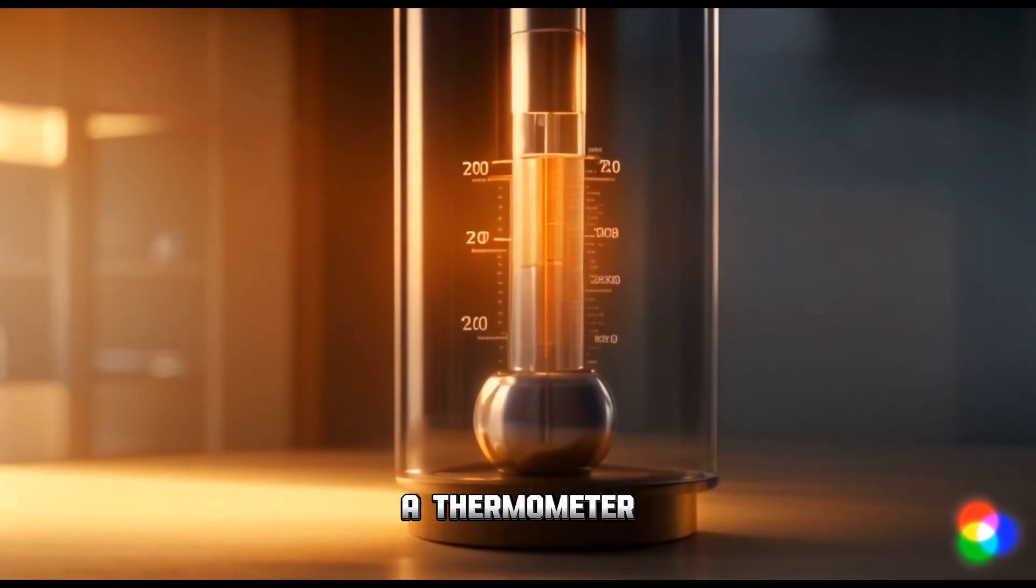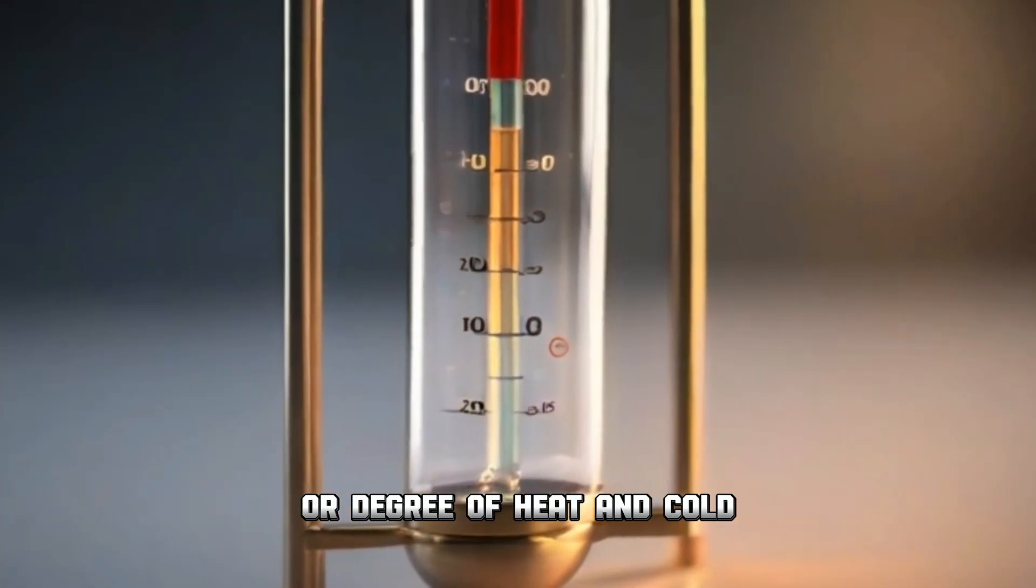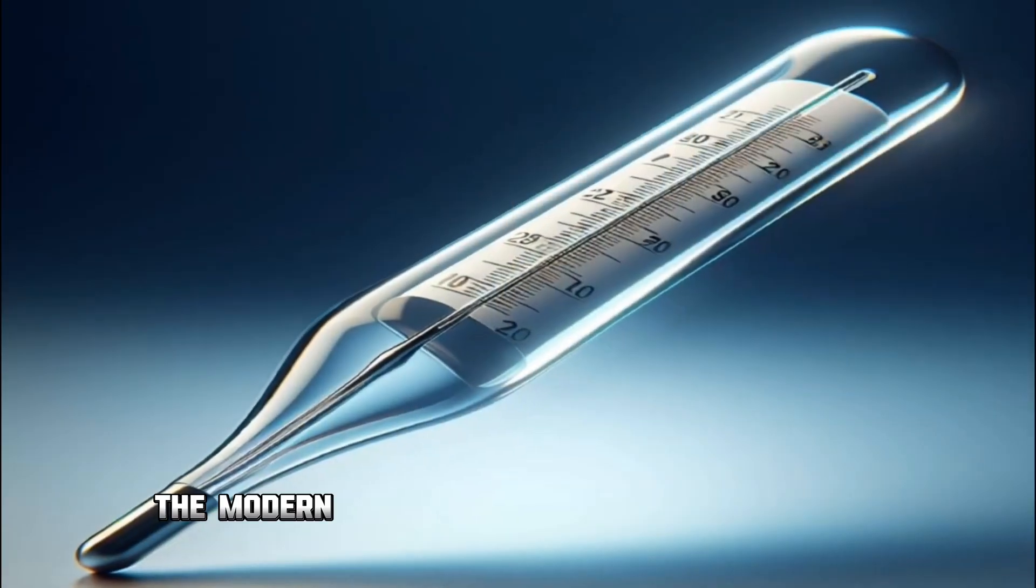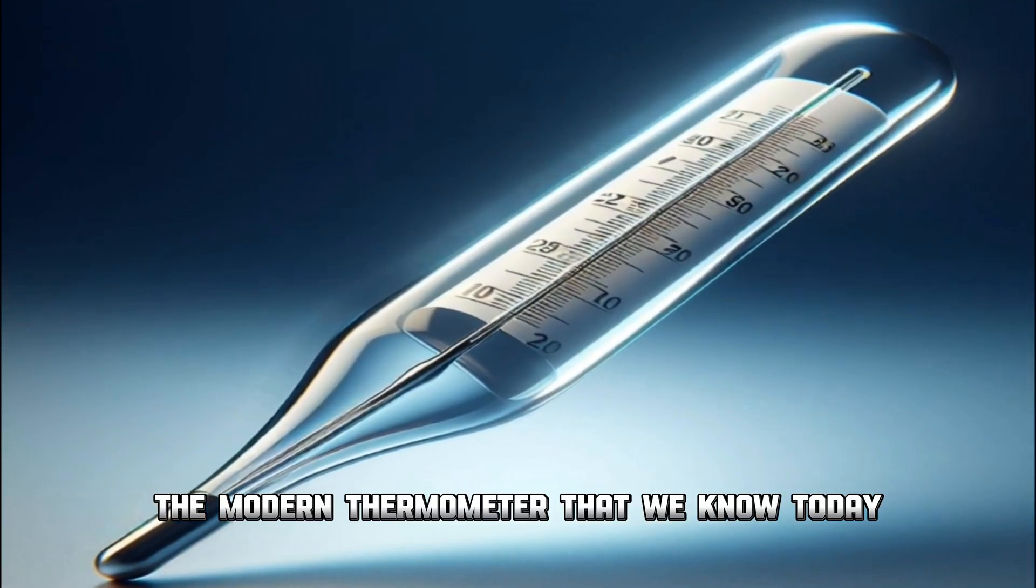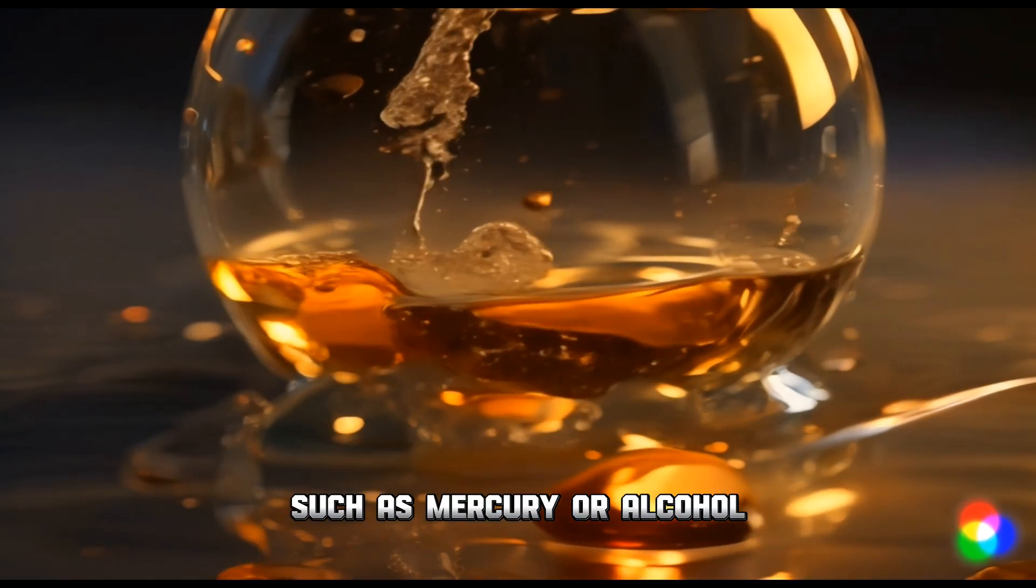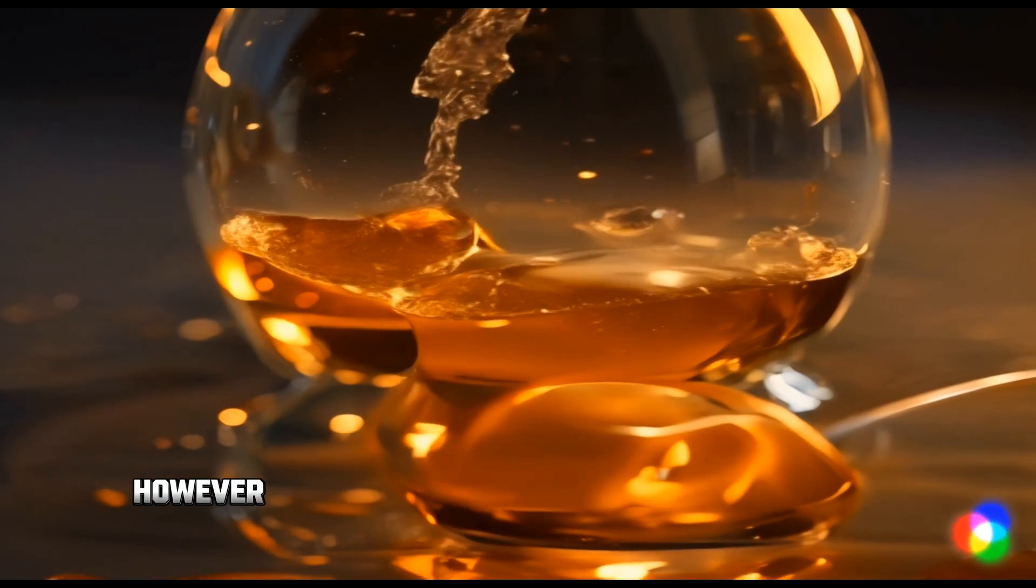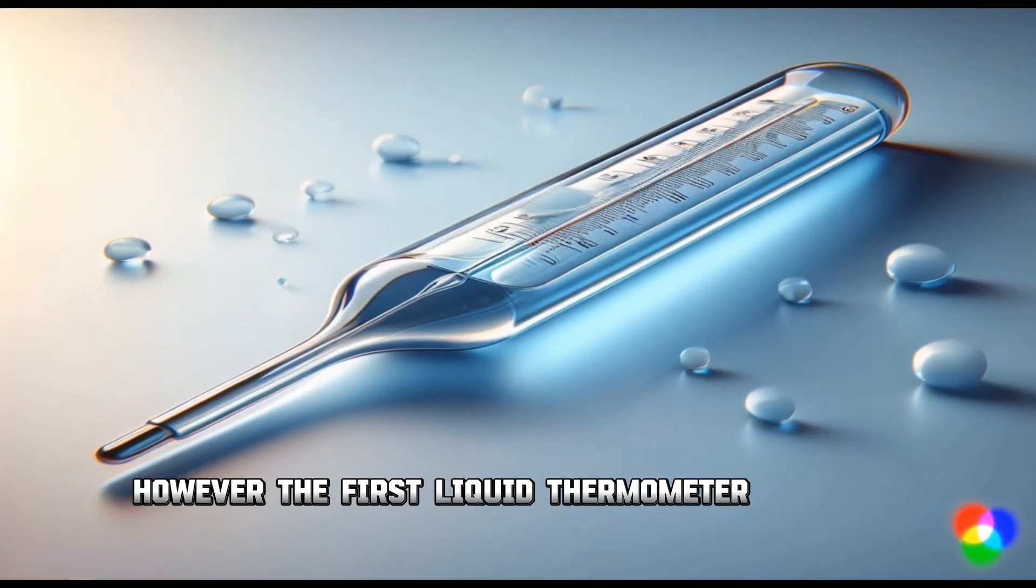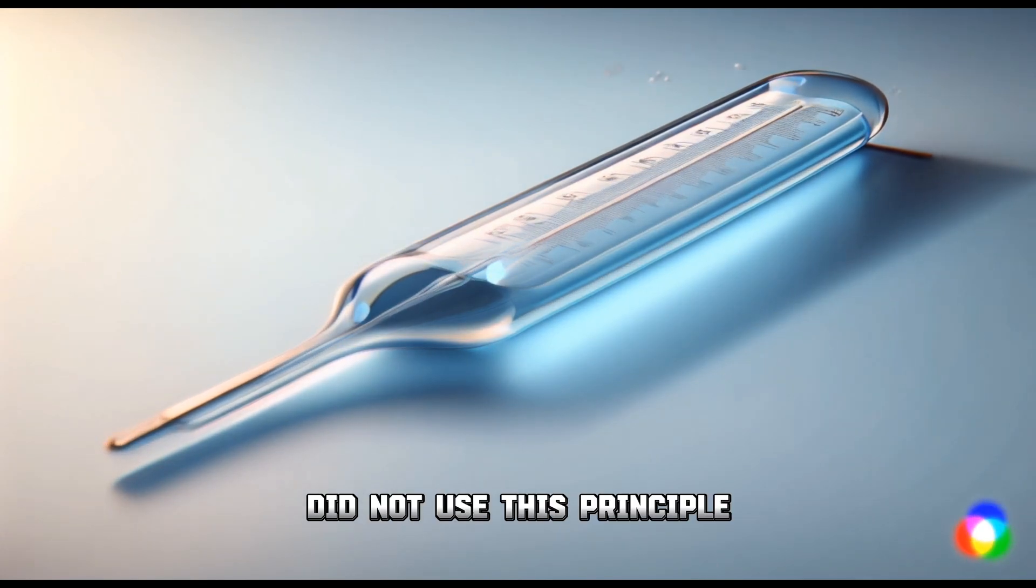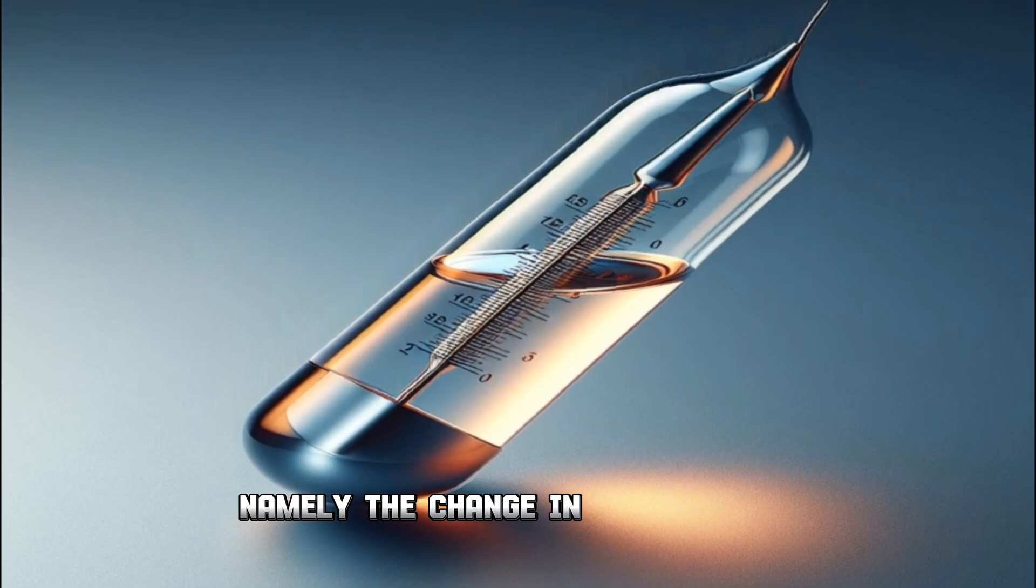A thermometer is a device used to measure the temperature of an object or substance. Modern thermometers typically use liquids such as mercury or alcohol that expand or contract with temperature changes. However, Galileo's first thermometer used a different principle: the change in air pressure.